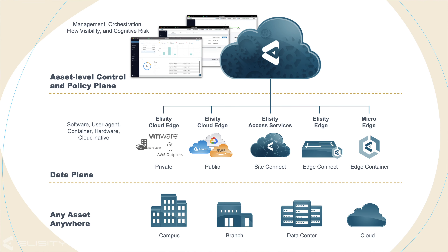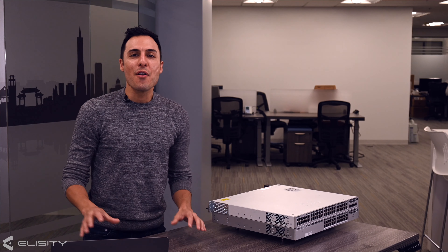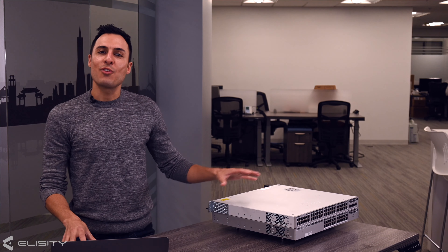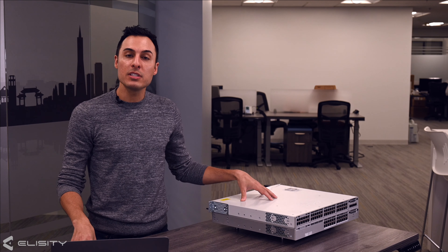Let's briefly go over the Elicity Cognitive Trust platform architecture. It all starts with our cloud-delivered control policy and management plane that we call Cloud Control Center. Once you have access to Cloud Control Center, deploying the data plane, whether physical or virtual, is quite simple and straightforward.